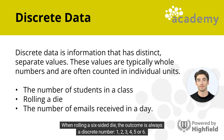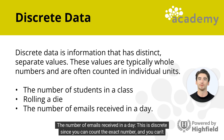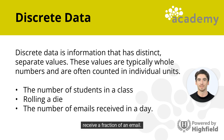The possible outcomes are 1, 2, 3, 4, 5, or 6. The number of emails received in a day is also discrete, since you can count the exact number and you can't receive a fraction of an email.